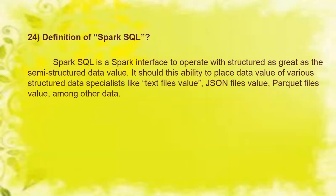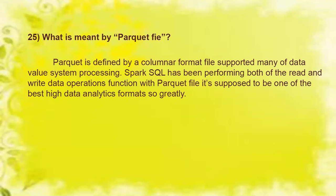Next is the definition of Spark SQL. Spark SQL is a Spark interface to operate with structured and semi-structured data. It has the ability to read data from various structured data sources like text files, JSON files, and Parquet files, among others. Parquet is a columnar format file supported by many data processing systems. Spark SQL can perform both read and write operations with Parquet files, and it is considered one of the best for high-performance data analytics.